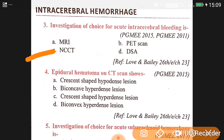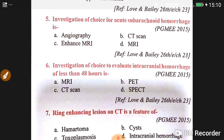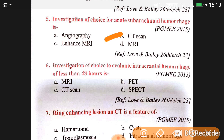Question number four: epidural hematoma on CT scan mainly shows biconvex hyperdense lesions. Question number five: the investigation of choice for acute subarachnoid hemorrhage is CT scan.